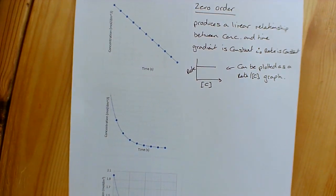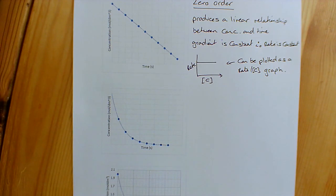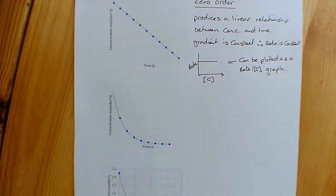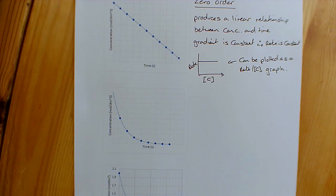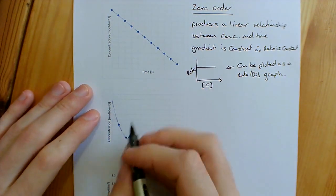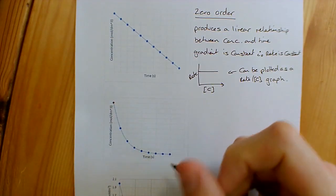In this second graph, the gradient changes, which means the rate changes — so it can't be zero order. As the concentration of our reactant varies, so does the rate. We now need to determine whether it is first order or second order.